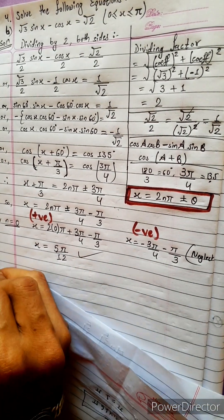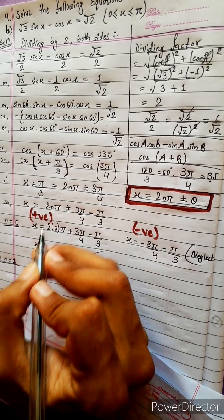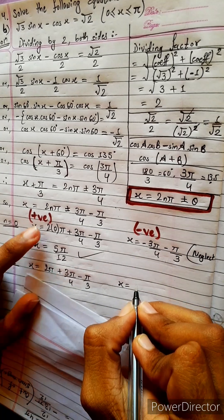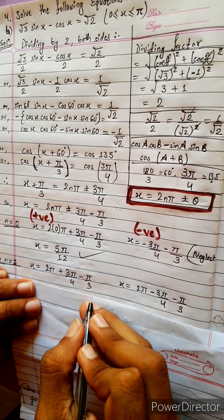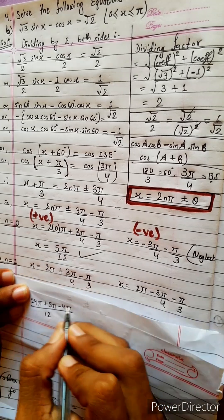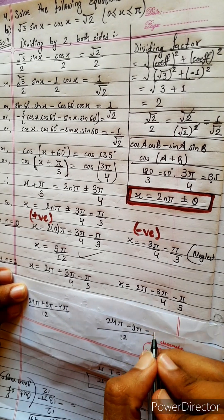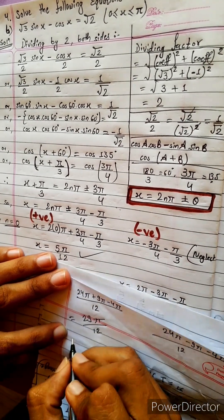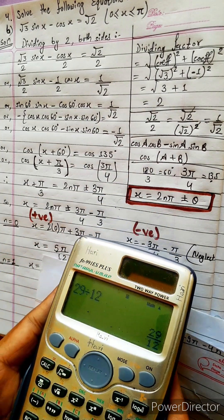Now let's check for n equals 1. For n equals 1: x equals 2 into 1 into π means 2π. Positive sector: here, taking LCM 12, here will be 24π plus 9π minus 4π. That gives 24 plus 5 equals 29π by 12. It will be greater than 2, but we need less than 1π, so neglect. 2.4 something pi — we need less than 1π, so neglect.